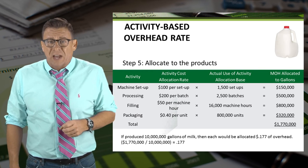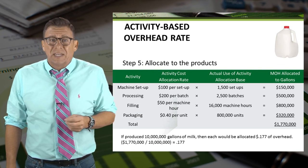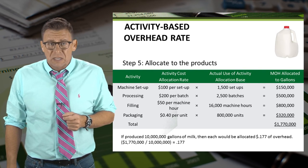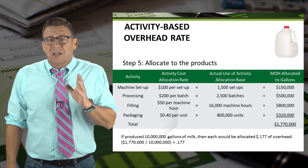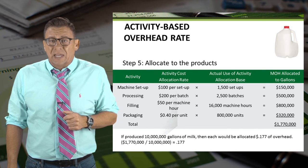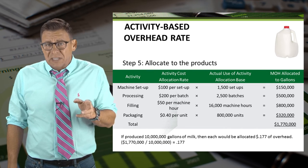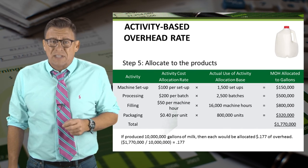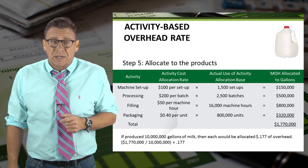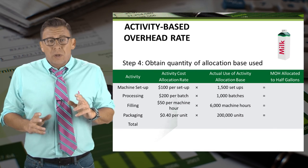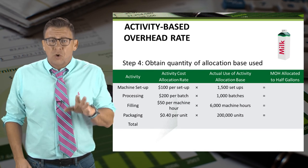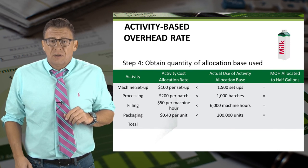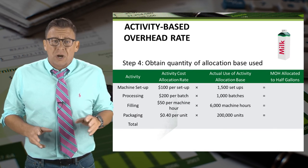Assuming we manufactured 10 million gallons, then each gallon of milk would be allocated 17.7 cents of overhead. We would repeat steps 4 and 5 for our other products.